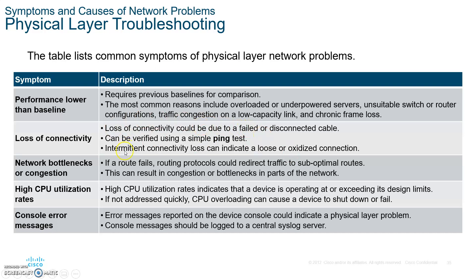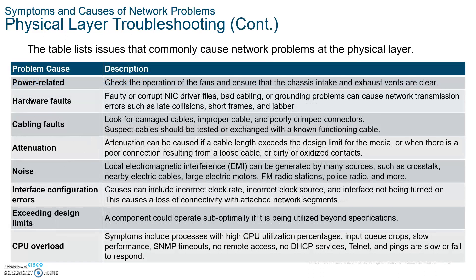Bottlenecking can occur if a route fails — for example, if you had a static route that fails and traffic is rerouted somewhere else, that might create bottlenecking. Also at the physical layer, take a snapshot: power-related hardware faults, cable faults, system attenuation where the signal dies out quickly, too much noise, electromagnetic interference, and a lot of interface errors — it could be any of these.